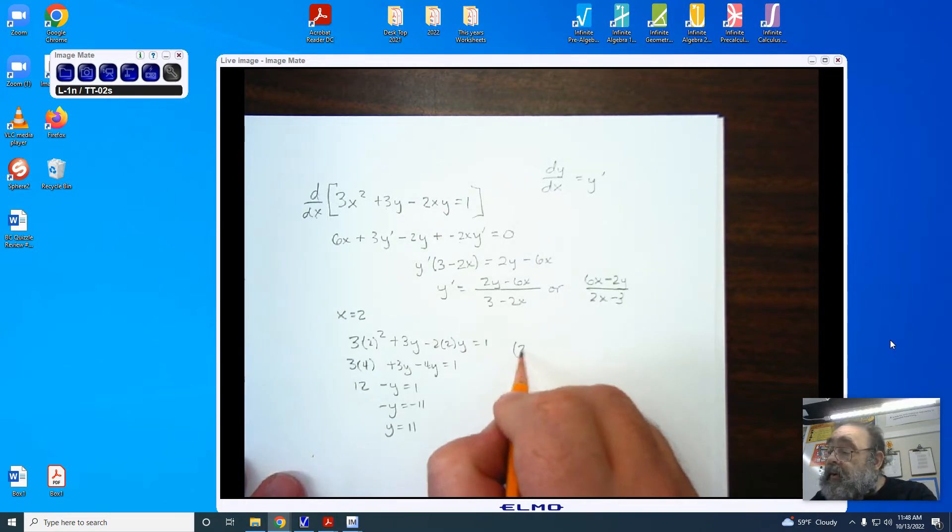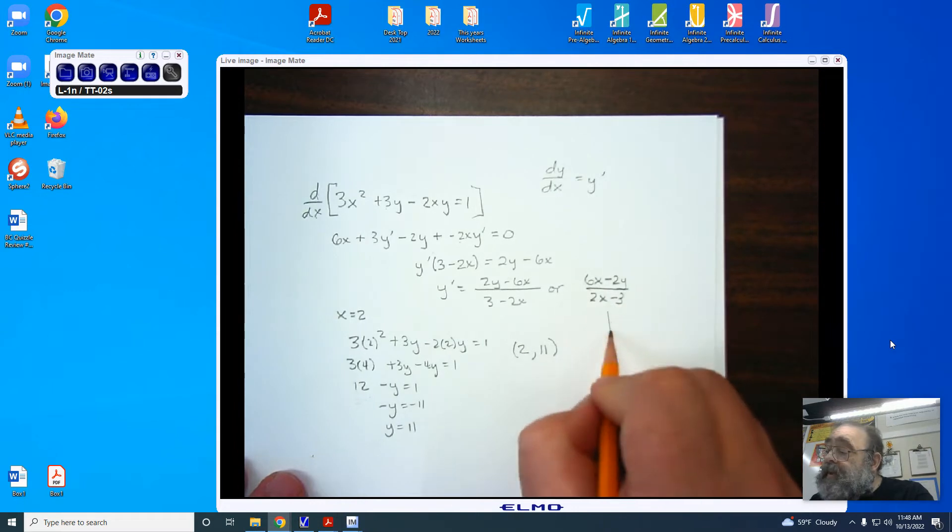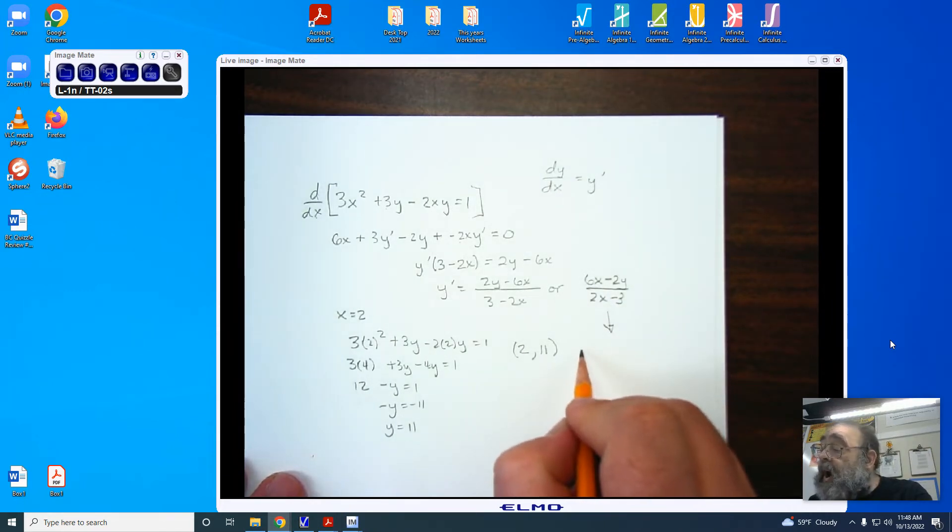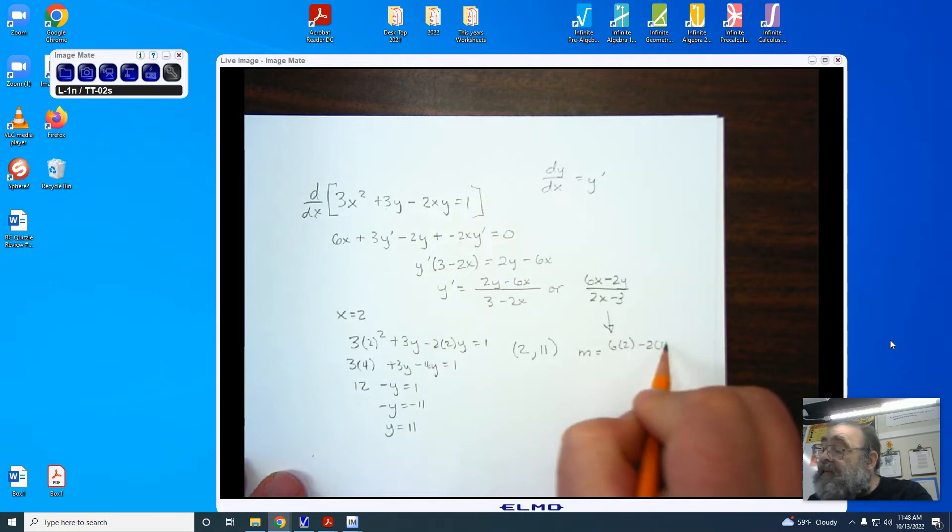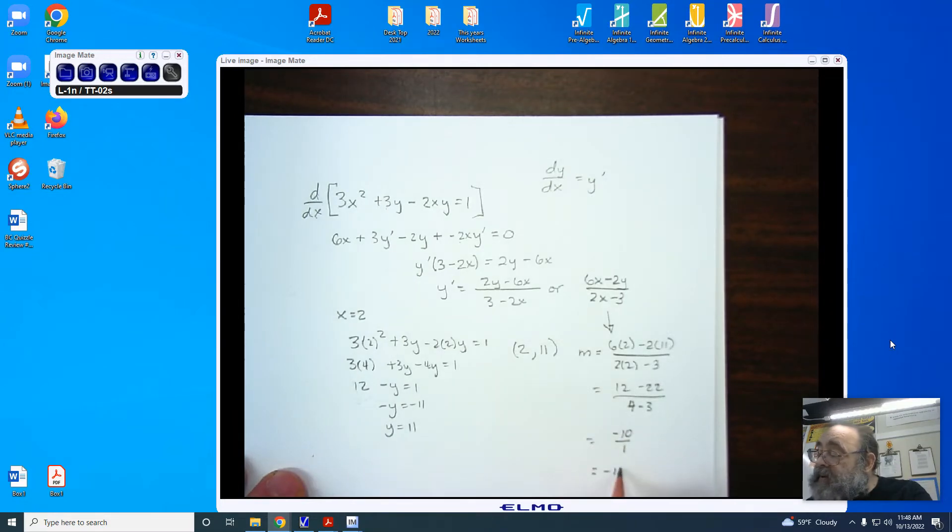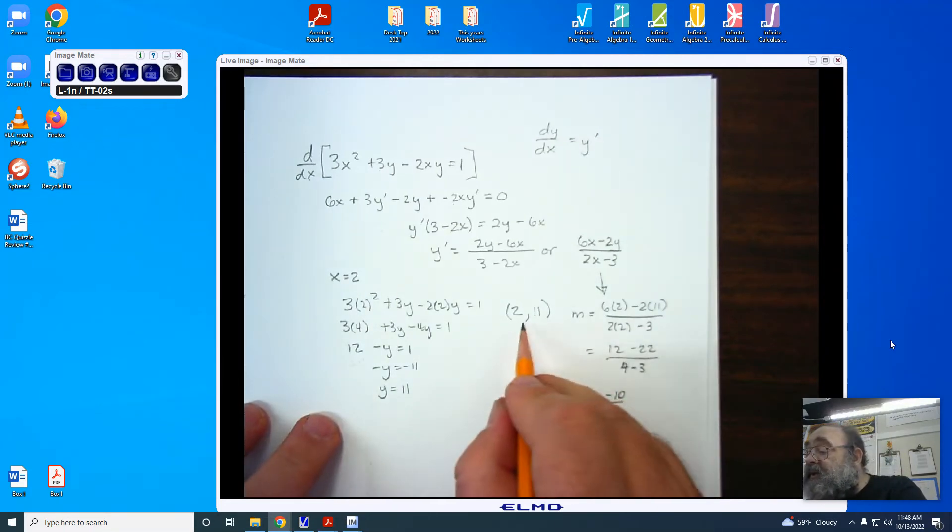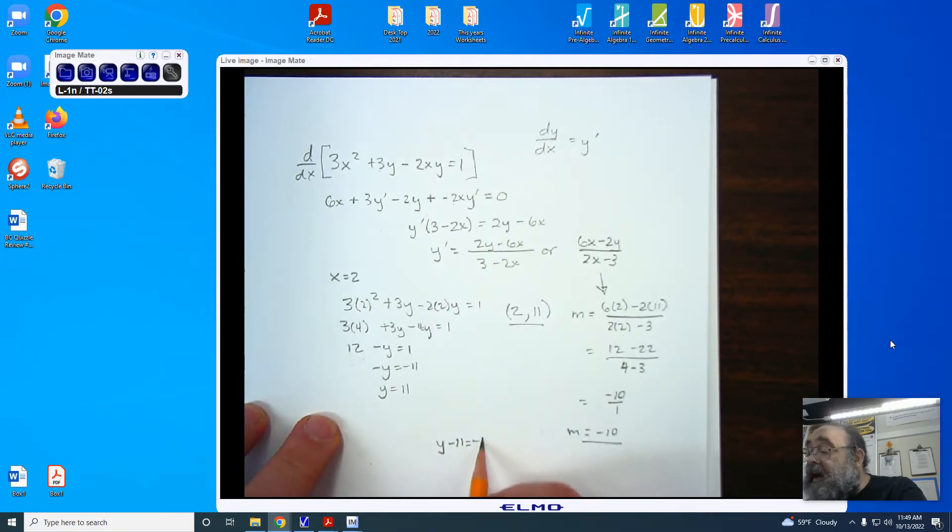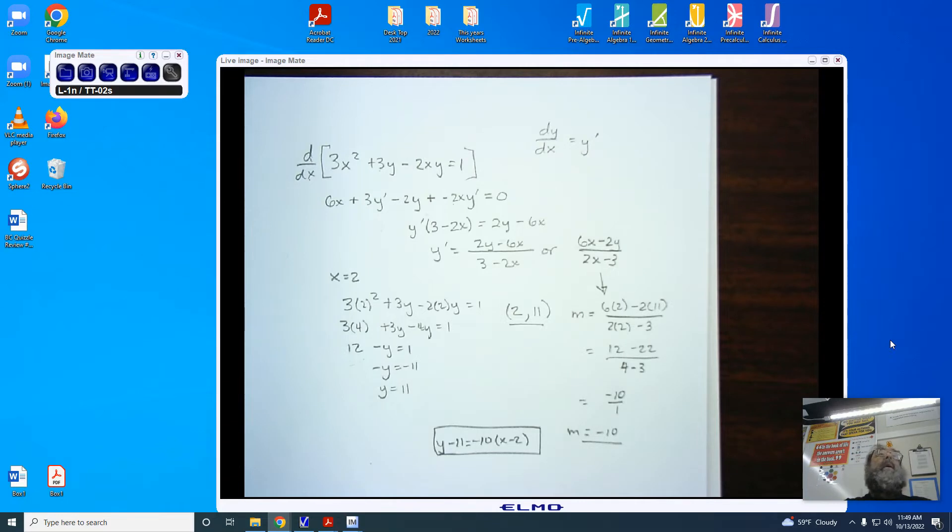The point is 2 comma 11. Our derivative comes from this piece here when we plug in x equals 2 and y equals 11. And the slope of the tangent line is going to have to be 6 times 2 minus 2 times 11 divided by 2 times 2 minus 3. This gives me 12 minus 22 divided by positive 1, 4 minus 3. I get negative 10 divided by 1, and my slope is negative 10. So the equation of the tangent line uses this point and this slope, and I can now call it y minus 11 equals negative 10 times x minus 2. This is the equation of the tangent line to the curve given to me at x equals 2.